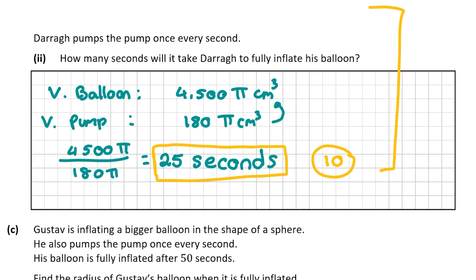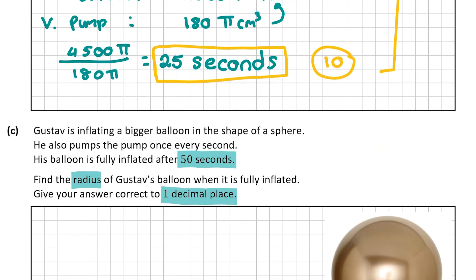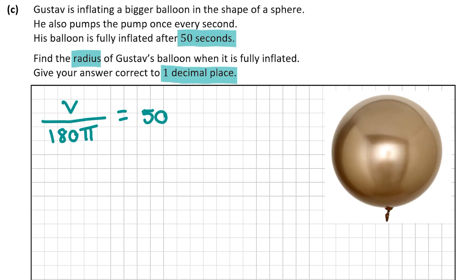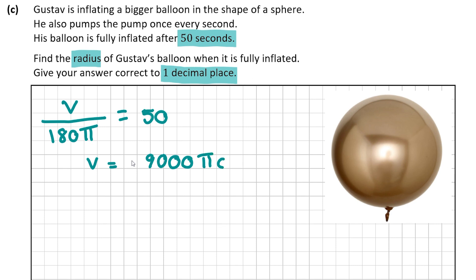Now for question C: Gustav also pumps once every second and his balloon is fully inflated after 50 seconds. We need to find the radius of Gustav's balloon, correct to one decimal place. First I'll find the volume of Gustav's bigger balloon. We're still using the same pump, so the volume equals 50 × 180π. The volume of the larger balloon is therefore 9000π centimeters cubed.